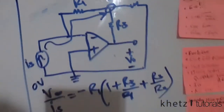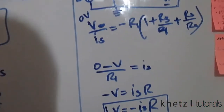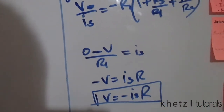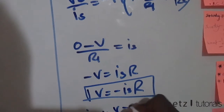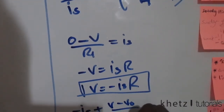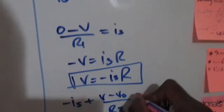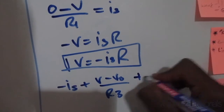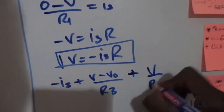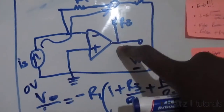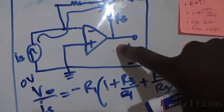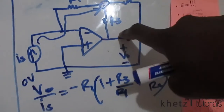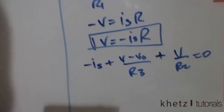Now let's do nodal analysis at node V. We have negative is — because is flows into node V — plus (V subtract vo) divided by R3, plus V divided by R2, equals zero. Between that point and the output we have V and vo, which is why we write V minus vo over R3.